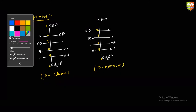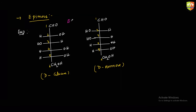Why epimers? Because they differ in configuration but not at the anomeric carbon — not at the first carbon. These two are the epimers of each other. And since the configuration differs at C2 carbon, we also call them C2 epimers. They ask this question in exams — they'll give you glucose and mannose and ask what kind of epimers: C1, C2, C3, C4? These are C2 epimers.